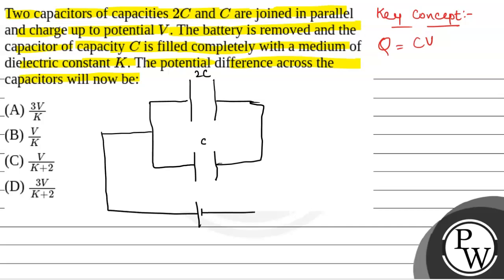This is a battery of potential V. The charge stored on this capacitor of 2C will be 2CV and the charge stored on the capacitor of C will be plus CV.